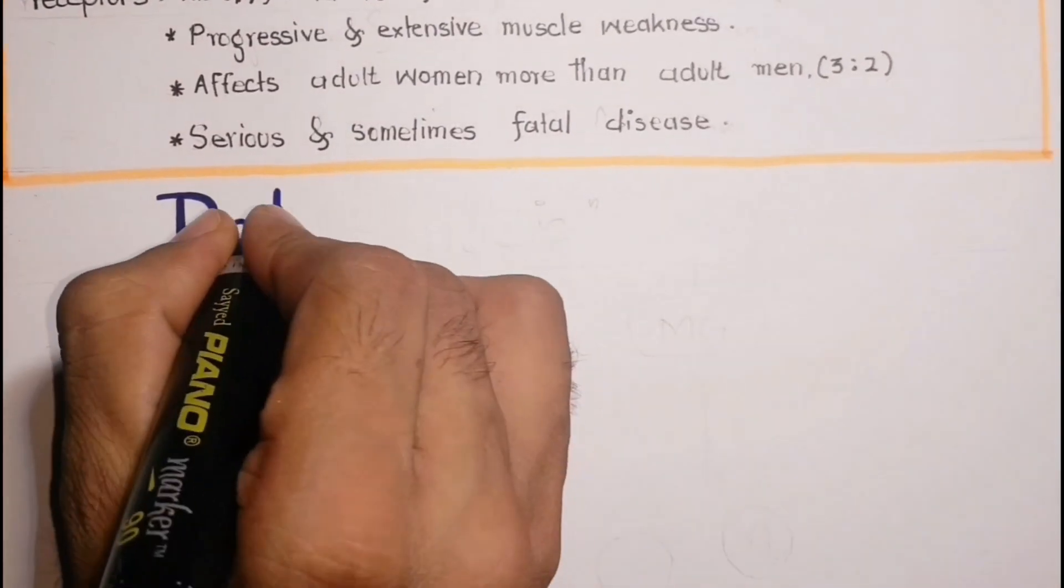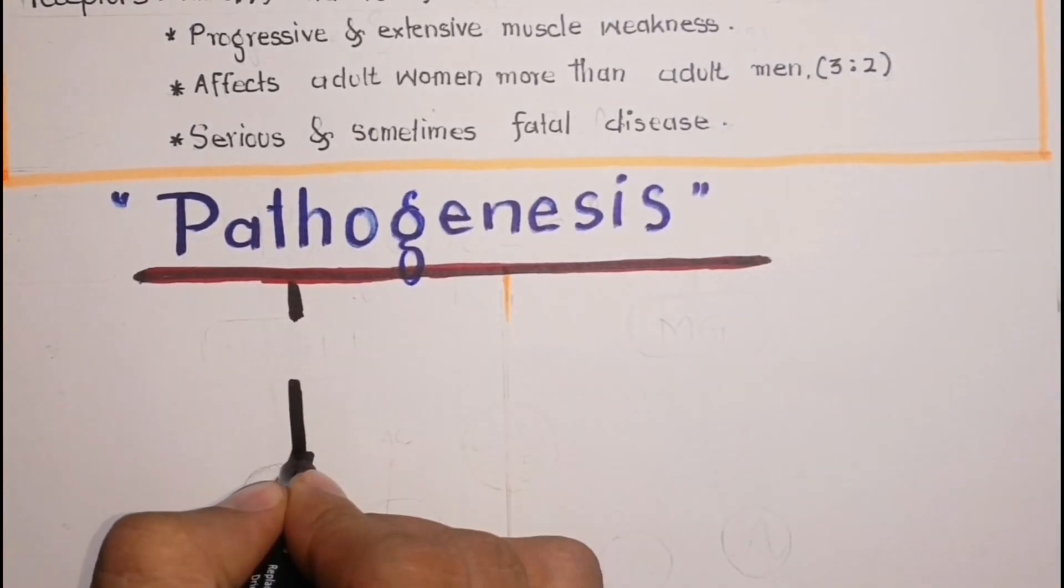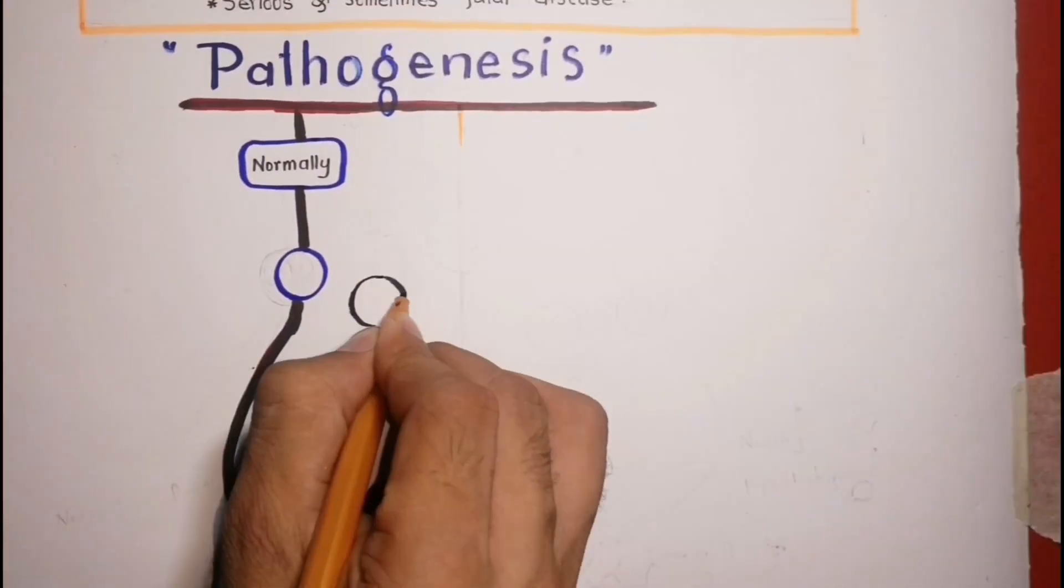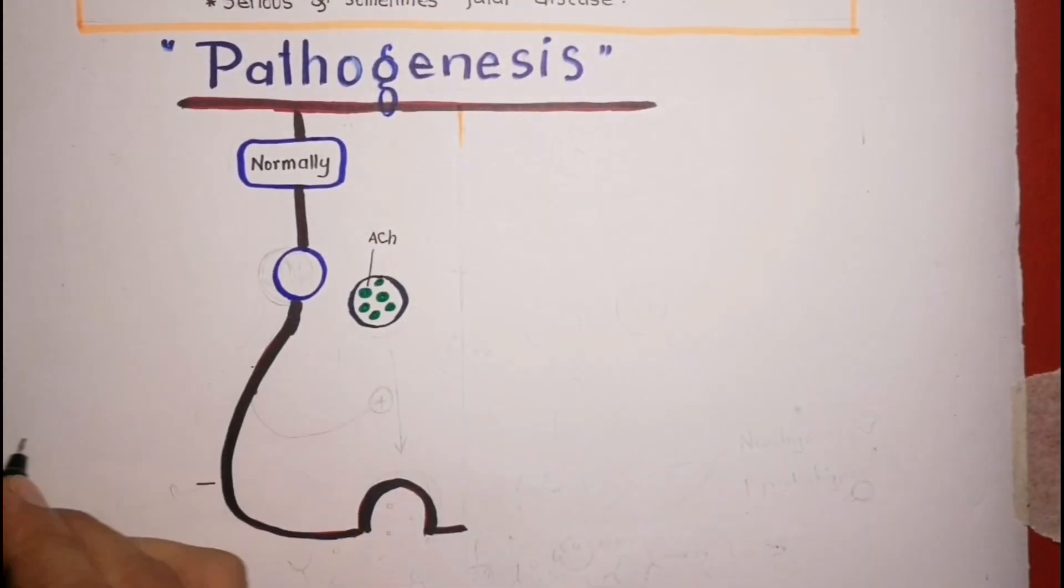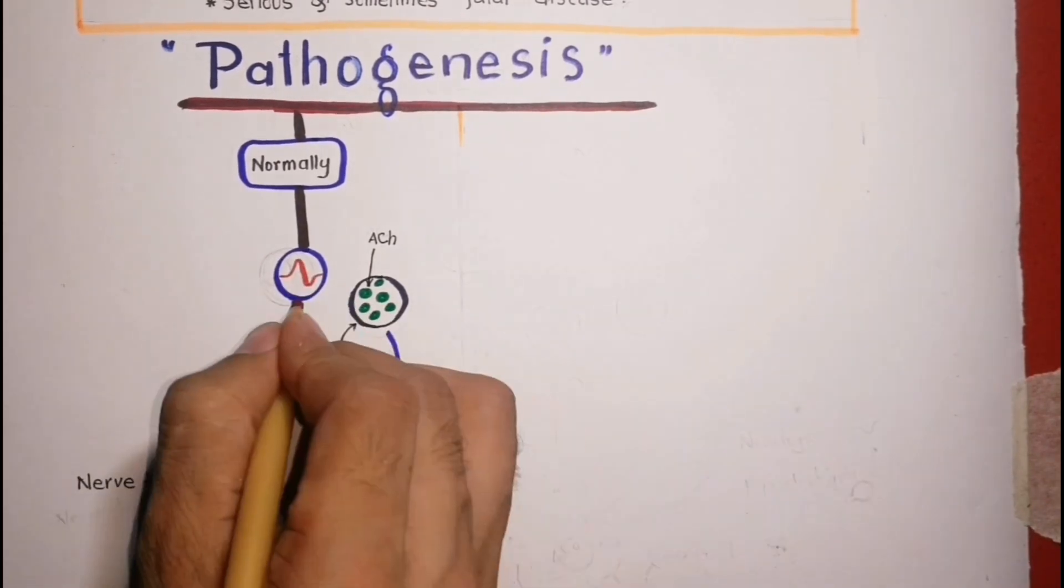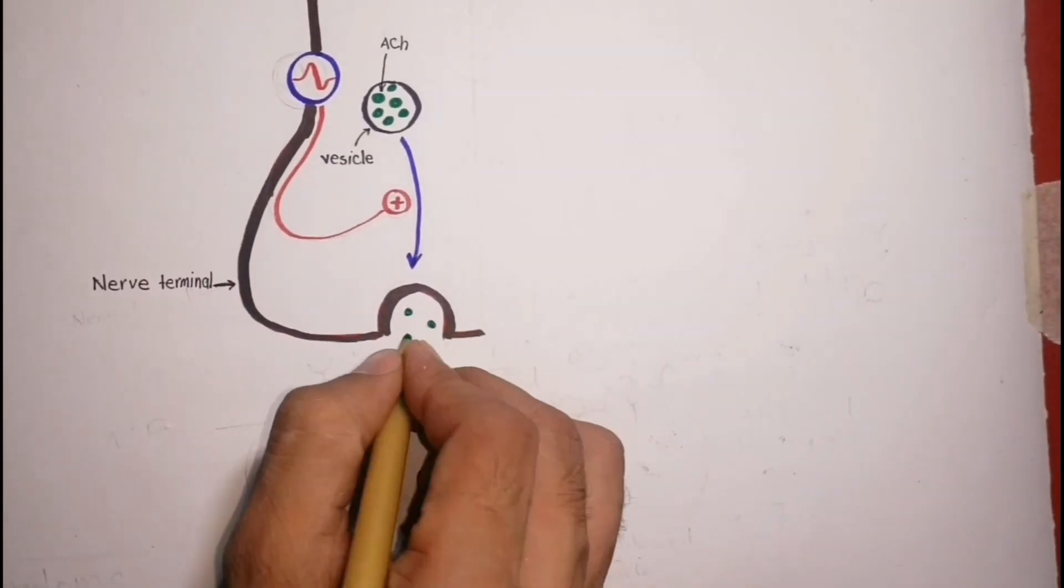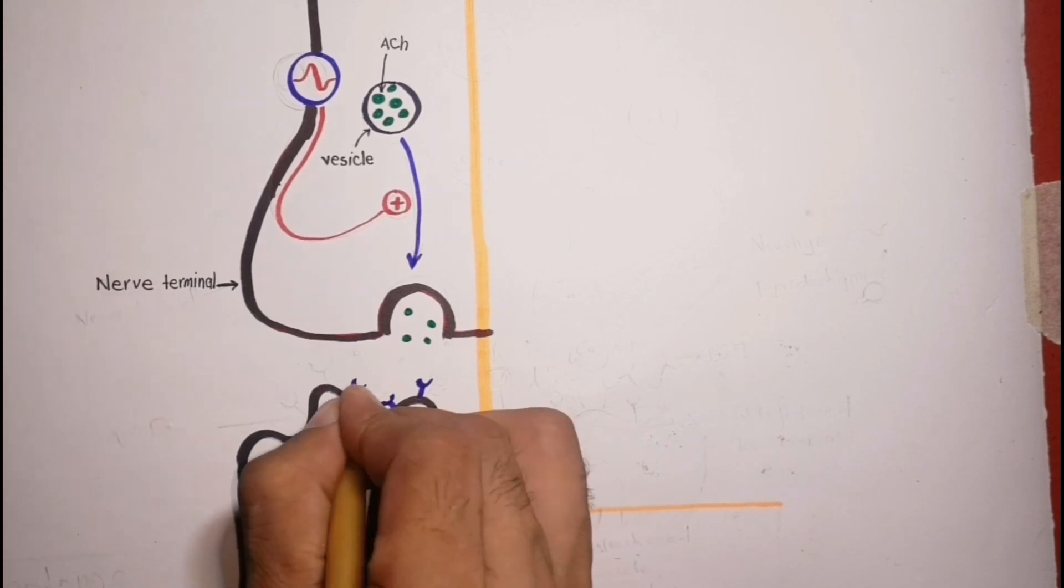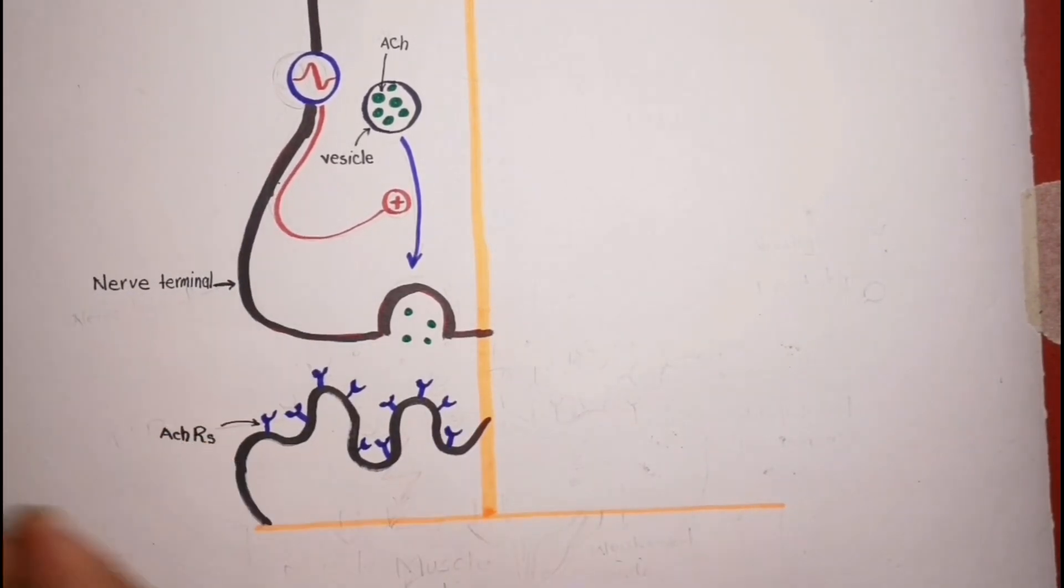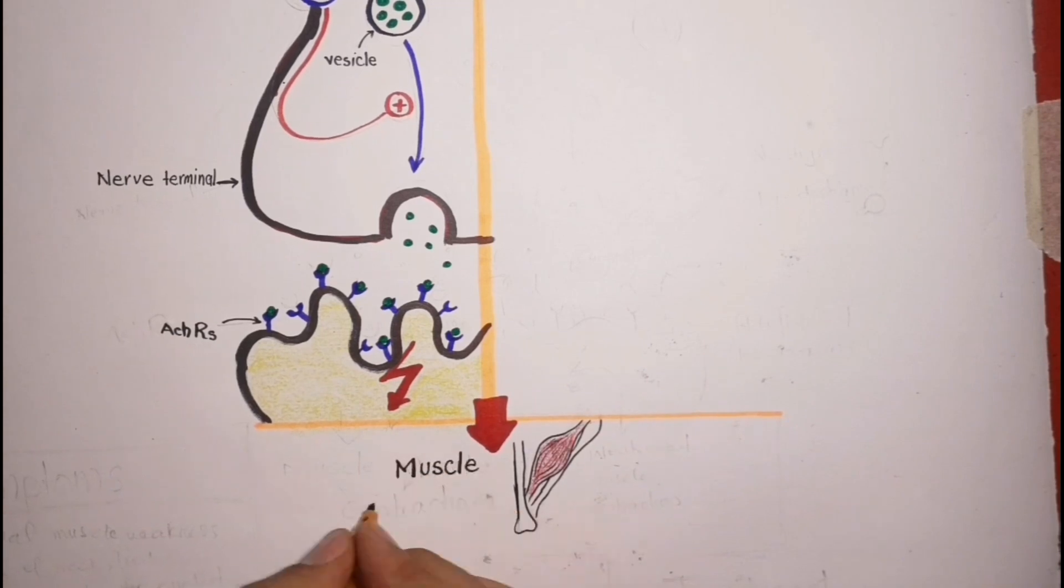Let's discuss about what happens in myasthenia gravis. Normally acetylcholine is synthesized in the motor nerve terminal and stored in vesicles that are released spontaneously when action potentials reach the nerve terminal. Acetylcholine from released vesicles combines with acetylcholine receptors initiating an action potential which is propagated along the muscle fiber triggering muscle contraction.